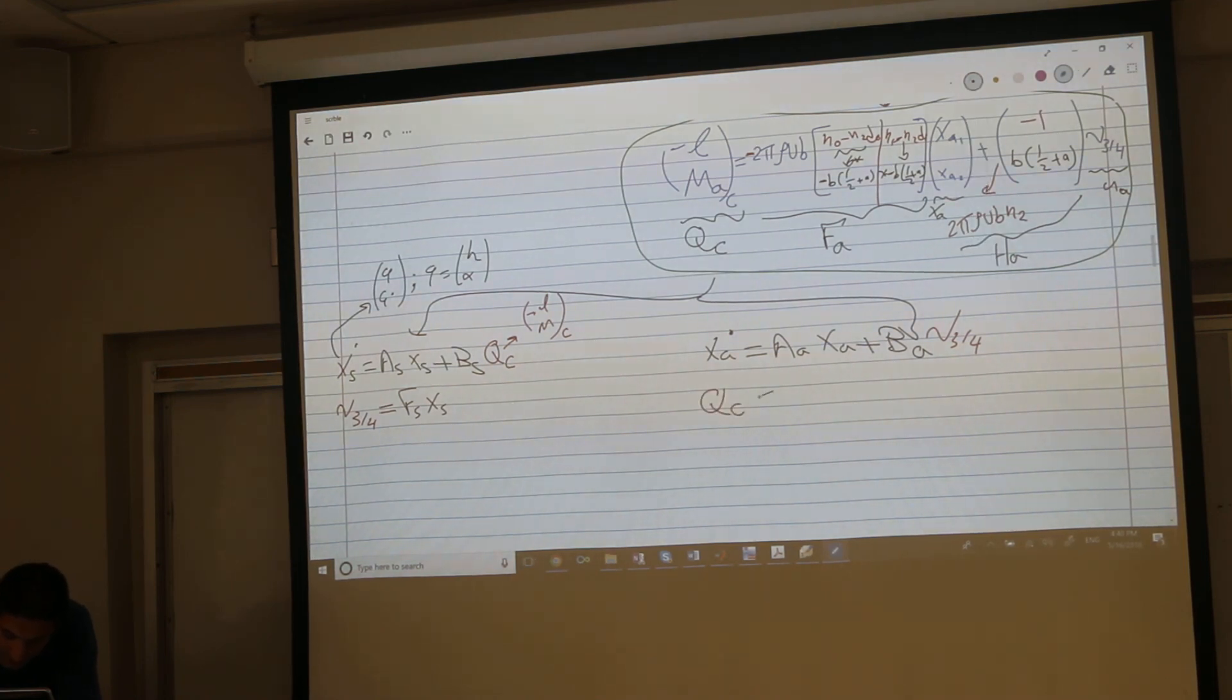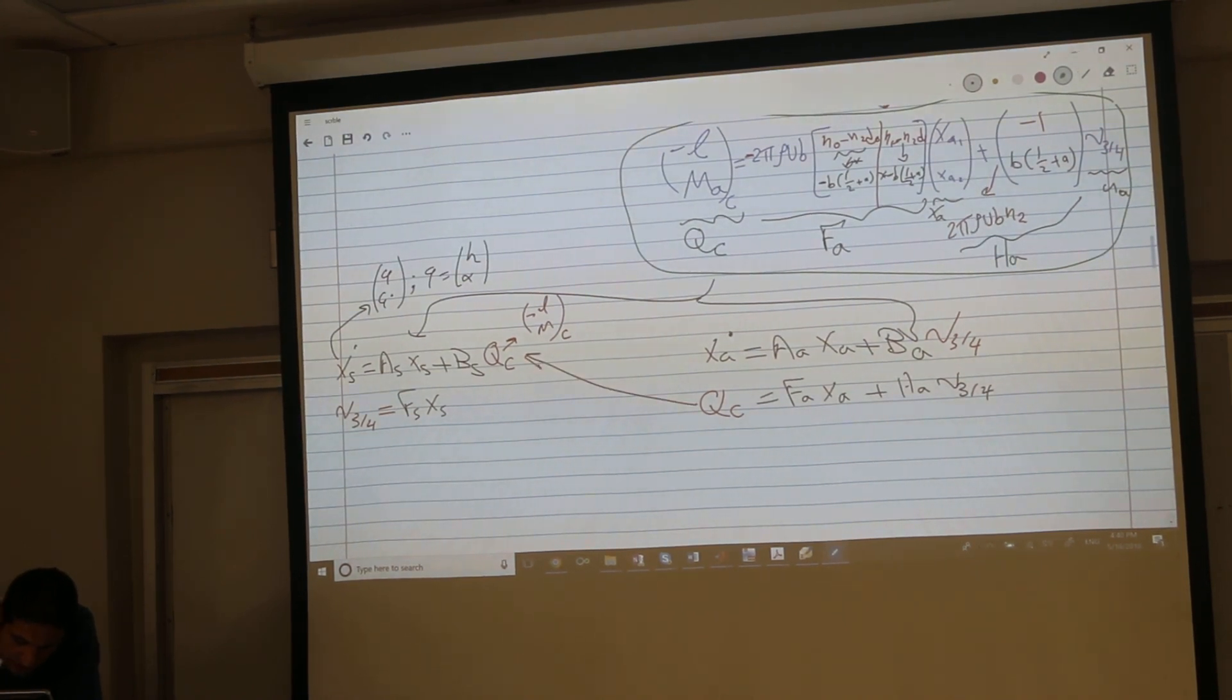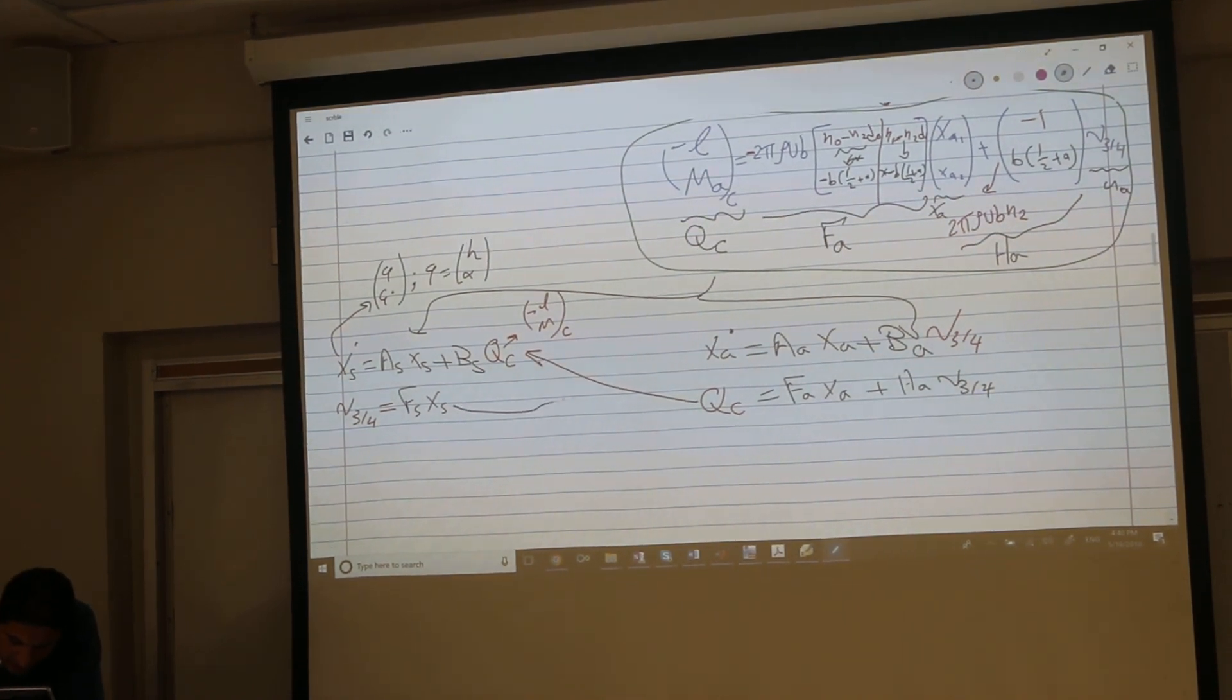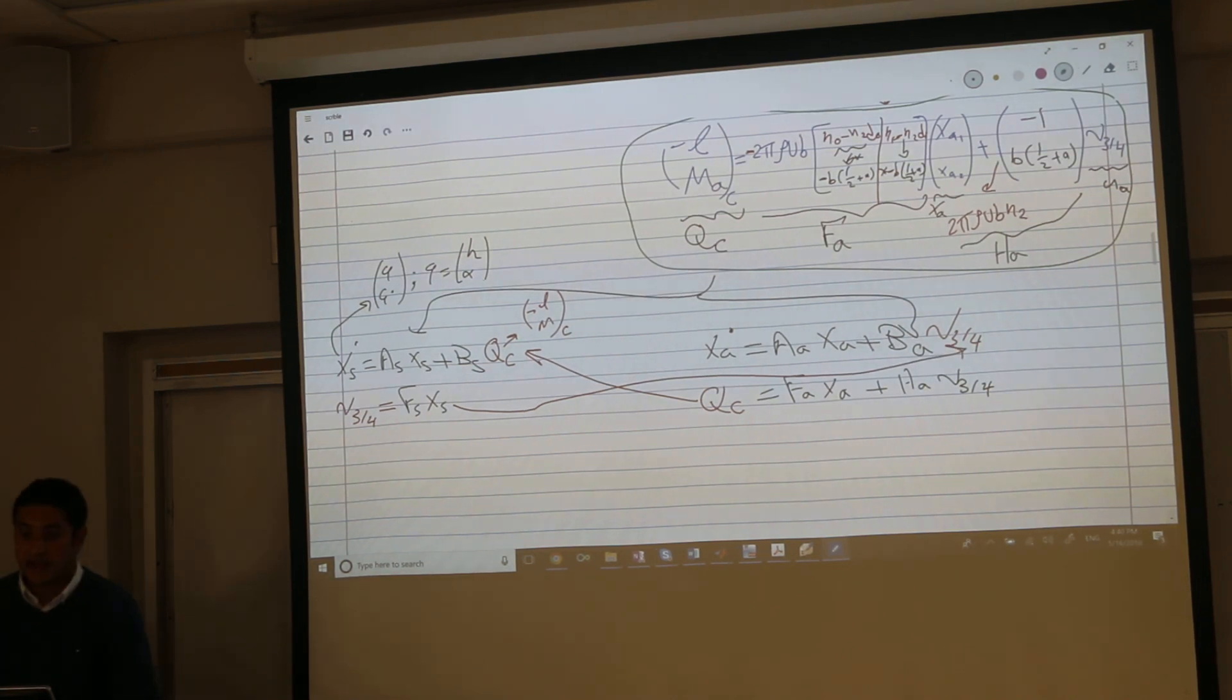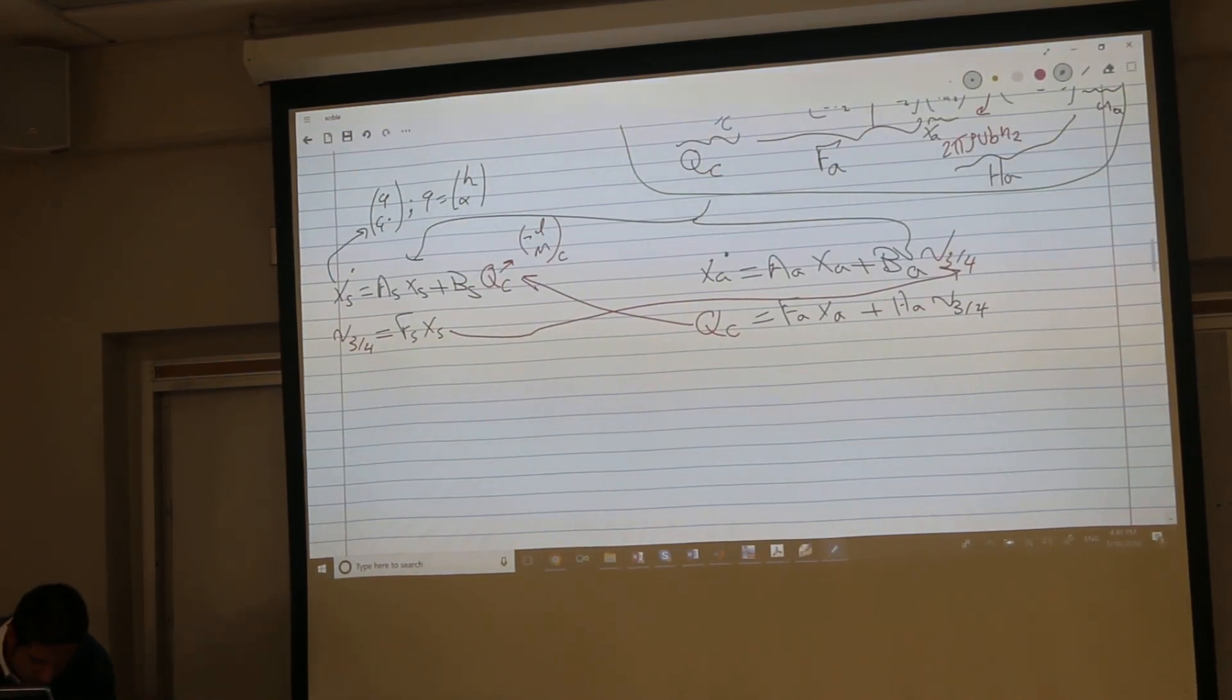And the output was QC. This is now equal F aerodynamics times X plus H aerodynamics times V3. And you can see immediately that the output of this guy going here to the input, the output of this guy going here to be the input. And let's write down the total model, the combined model.